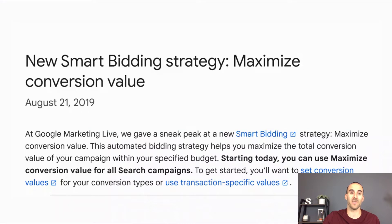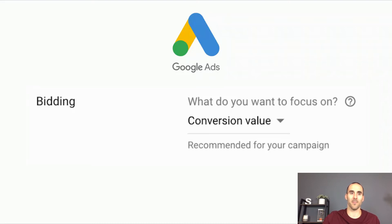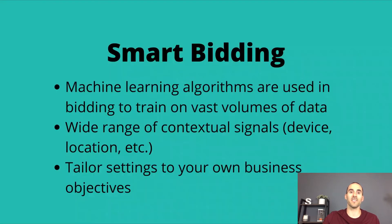Maximized conversion value bidding was introduced at Google Marketing Live in 2019. It automatically looks to bring in the highest revenue or lead value for your budget. There aren't a lot of bells and whistles when you set this up — in campaign settings, you choose 'conversion value' as your focus. This is a form of smart bidding, which is Google's black box using machine learning algorithms trained on vast volumes of data, using contextual signals like device, location, and time of day to set your bid automatically.